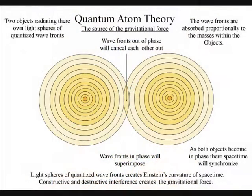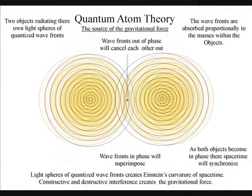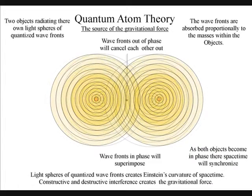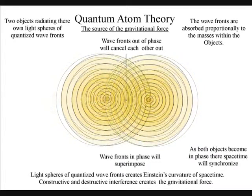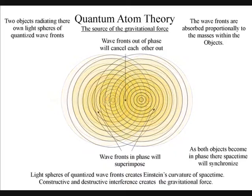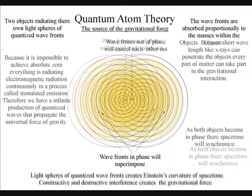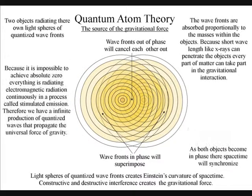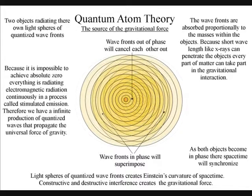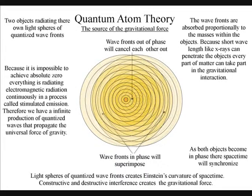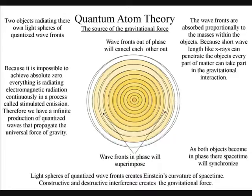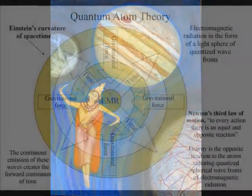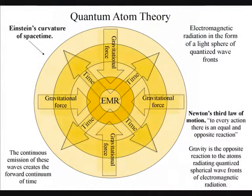When the wavefronts of two spheres come in contact, we will have destructive interference, and the wavefronts out of phase will cancel each other out. There will also be constructive interference between the wavefronts that are in phase, and they will superimpose. The radiant energy will be entirely absorbed proportionally to the masses within the objects. This will cause an unbalanced force, and the two objects will resonate together in a process known as gravity.